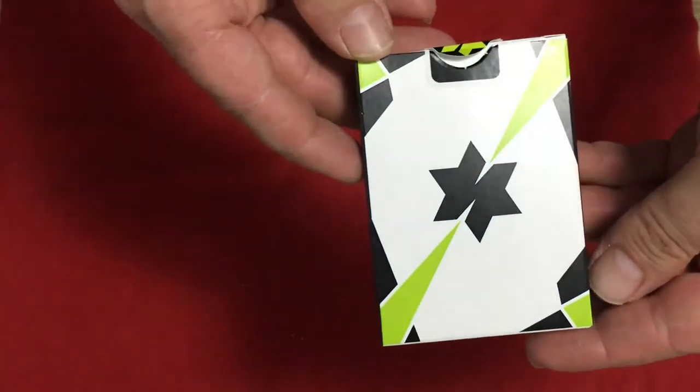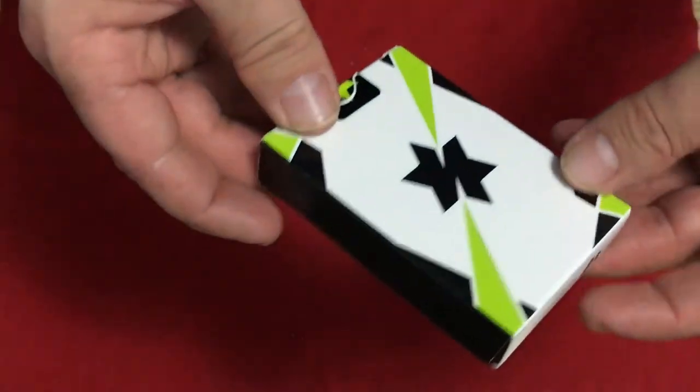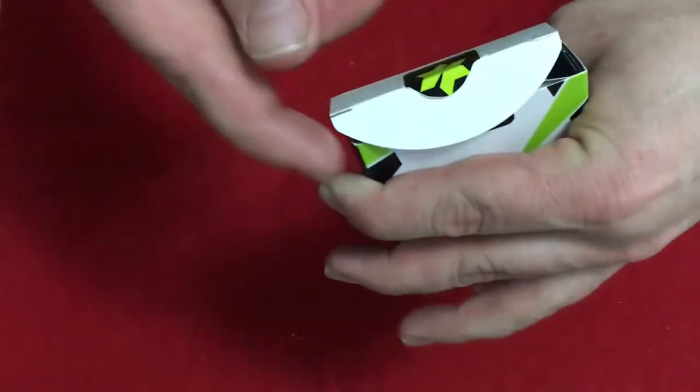And in the back you see the back design. There is a custom seal with the Surrican on there. Just a standard tuck case. Nothing on the flaps. And then we get to the cards.